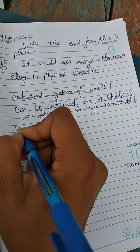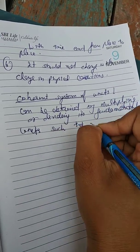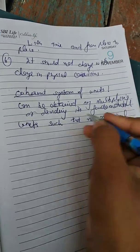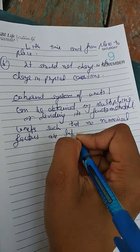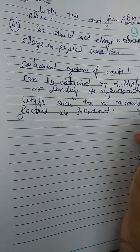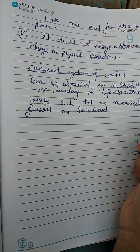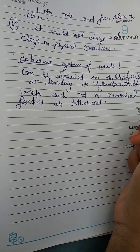Fundamental units such that no numerical factors are introduced. Means coherent system of unit is that system of unit in which we can derive units by multiplying and dividing the fundamental units of all the quantities.